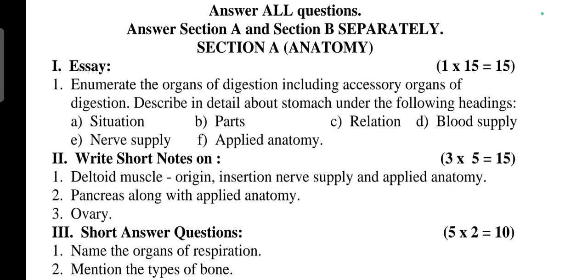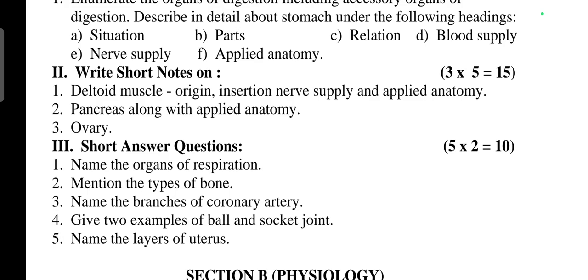Section A, Anatomy. First essay: Enumerate the organs of digestion including accessory organs of digestion. Describe in detail about stomach under the following headings: situation, parts, relations, blood supply, nerve supply, applied anatomy. 15 marks.